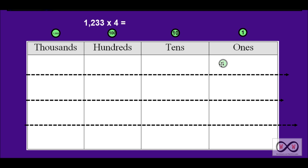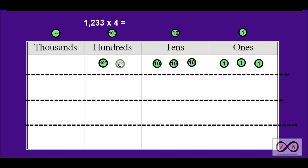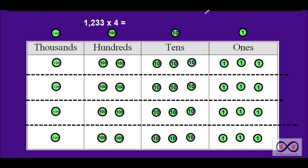We see three ones, three tens — 10, 20, 30 — two hundreds — 100, 200 — and one in the thousands place, or 1,000. Now we're going to repeat this process four times. If I'm going too fast for you, feel free to pause the video and make your own partitions and place value disks on the place value chart.